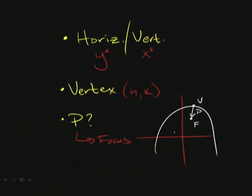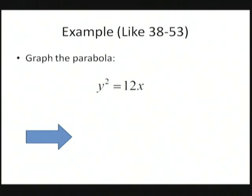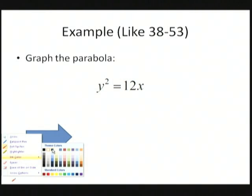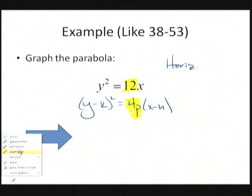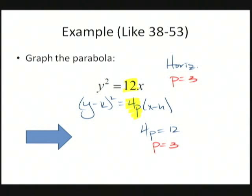Moving back to this one, we'll answer a couple questions. We see that it's y squared, so it's going to be horizontal. If we notice that 4P is the coefficient of x, just like 12 is, so 4P = 12, which tells us that P = 3. I know that P = 3, it's horizontal, and I don't have any h or k values, so my vertex is going to be (0, 0).